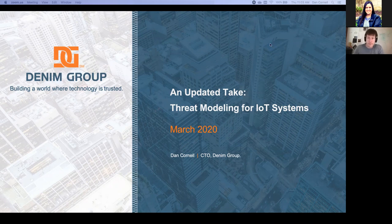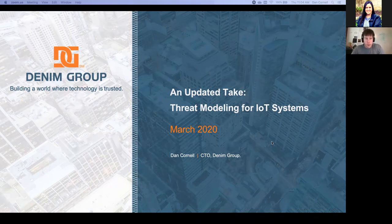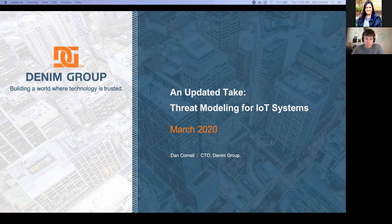Good morning everyone, and welcome. I'm Keri Burke, your moderator for today's webinar, 'An Updated Take: Threat Modeling for IoT Systems.' You may send in questions at any time during the presentation via the chat feature. We will collect these and address them at the end of today's presentation. I would now like to introduce Dan Cornell, a globally recognized application security expert who holds over 15 years of experience architecting, developing, and securing web-based software systems. As Chief Technology Officer and Principal at Denim Group, he leads the technology team to help Fortune 500 companies and government organizations integrate security throughout the development process.